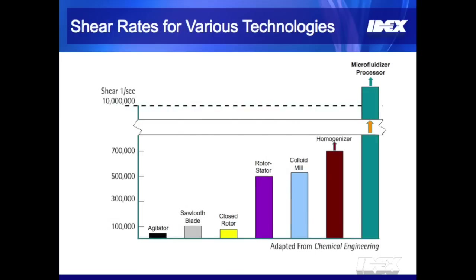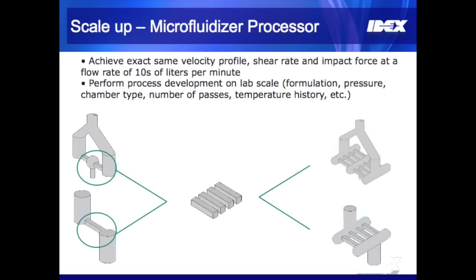The main benefit of the microfluidizer processor is the extremely high shear rate we are able to generate, much higher than any other technology, and the inherent scalability of our process. When we scale, we add additional micro channels placed in parallel to ensure that every microliter gets the same processing conditions, and to ensure that processing conditions achieved at the lab scale can be replicated at the production scale.